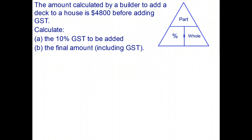As before, the GST is 10% of the amount of money that the builder wants to make, which is $4,800. Again, dividing by 10, move the decimal point one place, so the GST on that's going to be $480.